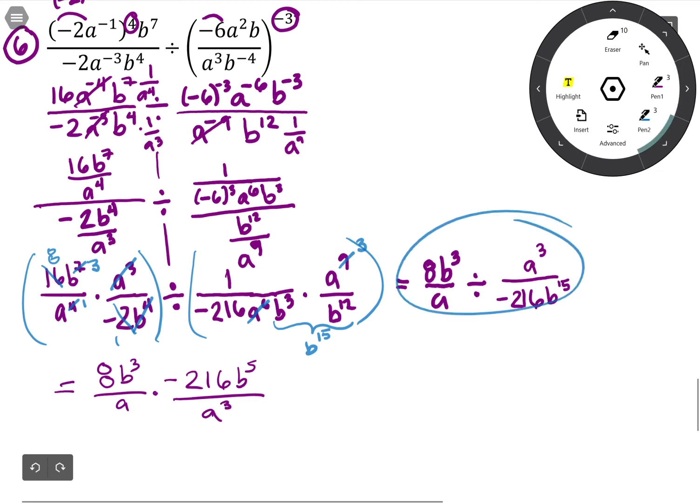So avoid the temptation in this step right here to cancel a's or b's. Notice that when we do this correctly, when we divide, it actually flips over, so I'm going to end up not getting any canceling out of that.